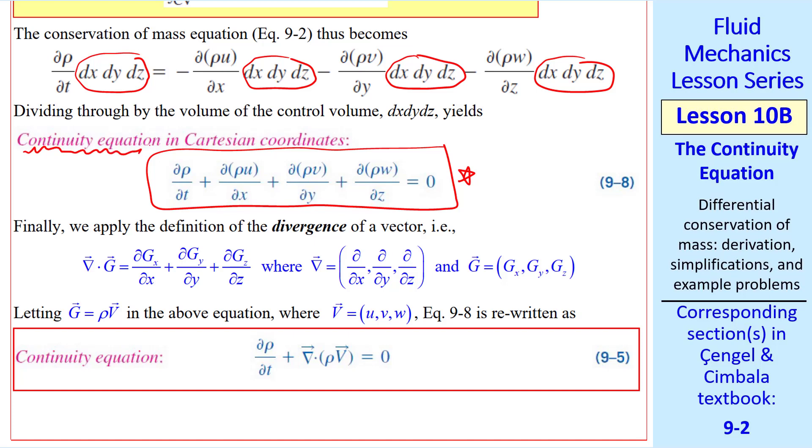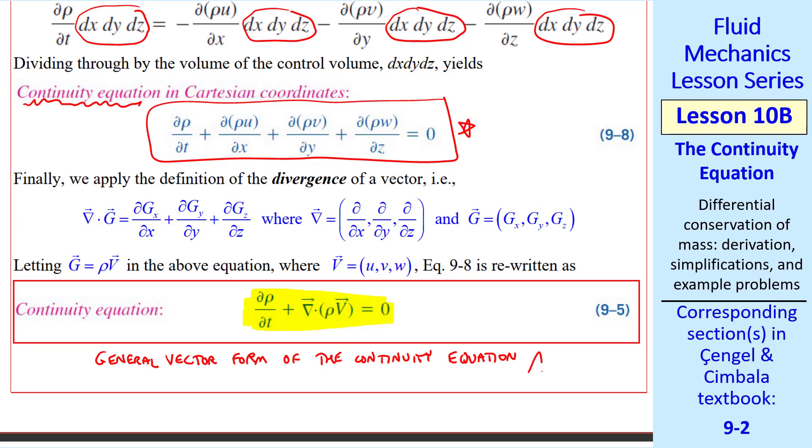Continuity equation is simply another way of saying the differential equation for conservation of mass. Now recall from your math class that del dot g, or the divergence of a vector g in Cartesian coordinates, is given by this, where the gradient vector is del x, del y, del z, three components. And g is some arbitrary vector with components gx, gy, gz. We can see that these three terms are of that form if we let g be rho v, or v is a vector, the velocity vector, with these components. So in more general terms, we can write this as del rho del t plus del dot rho v equals zero. This is the general vector form of the continuity equation. And our derivation is complete.